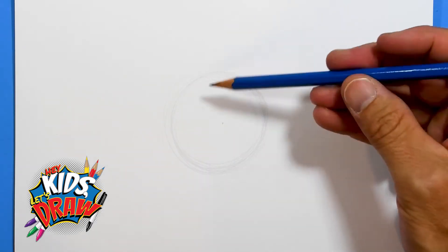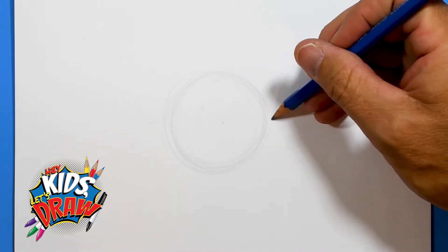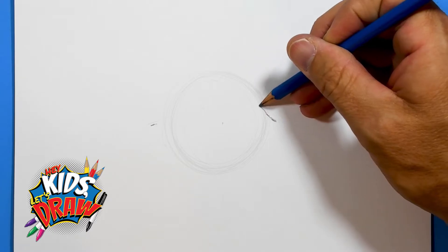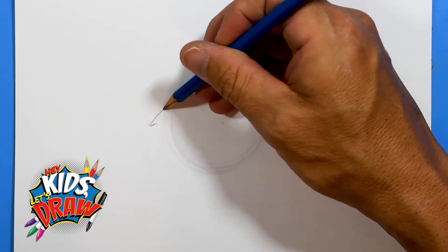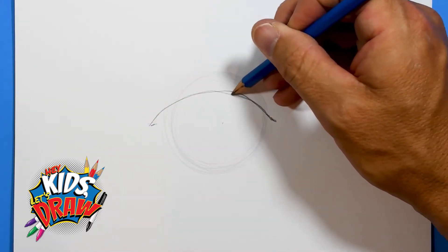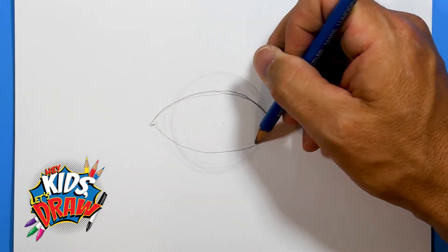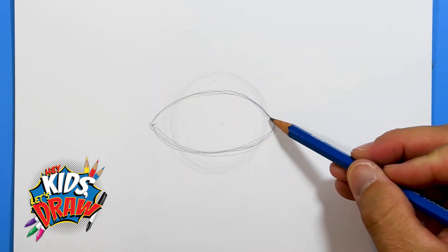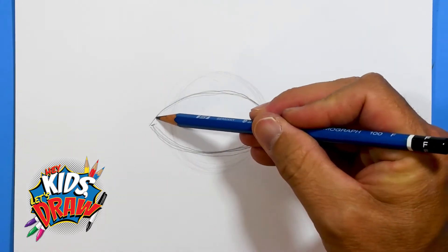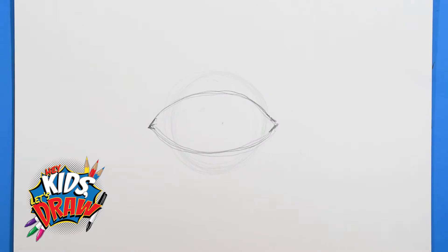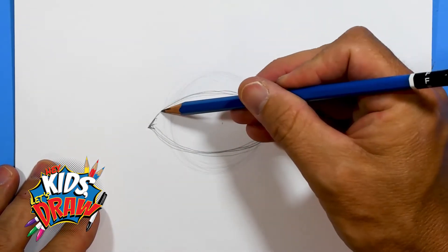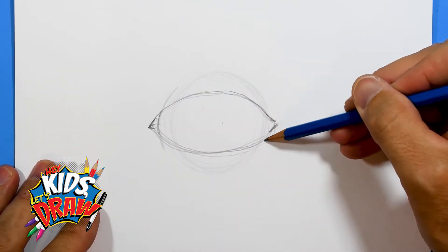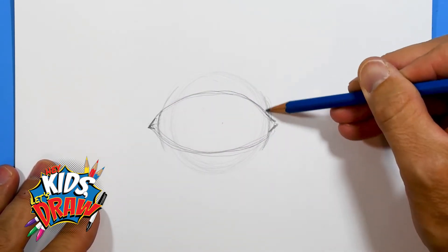Now we're gonna add skin, kind of a football shape over the circle. Draw this football shape leaving a point over here and a point over here. The circle is gonna come around. The best way to do art is to start blocking in the shapes.